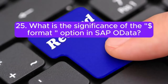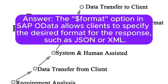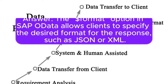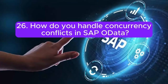Question 25: What is the significance of the $format option in SAP OData? The $format option in SAP OData allows clients to specify the desired format for the response, such as JSON or XML. It enables content negotiation between the client and server.